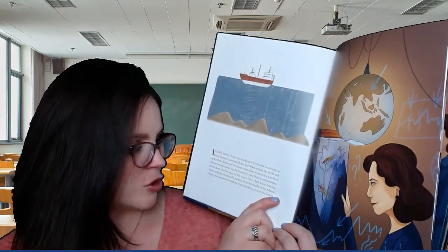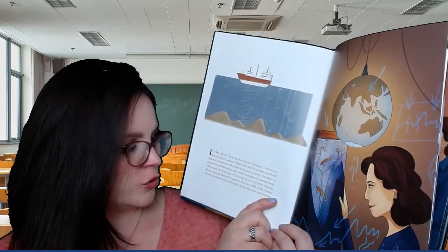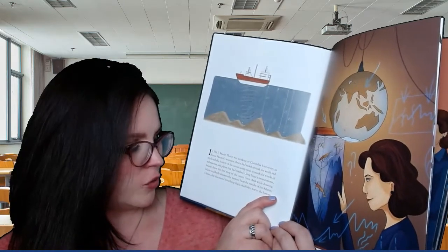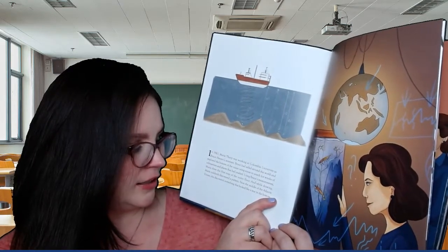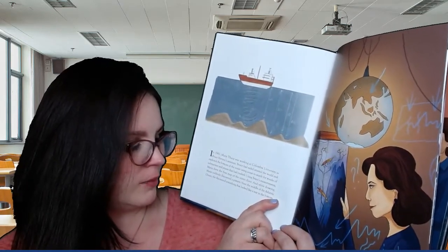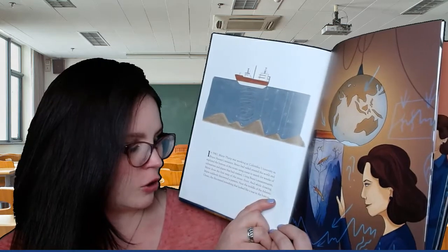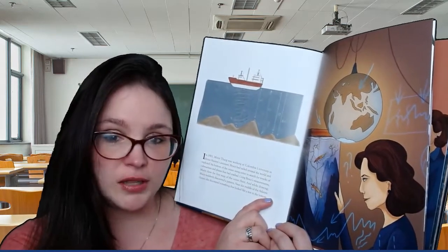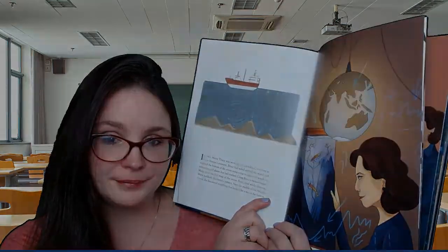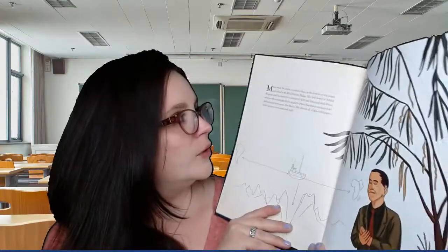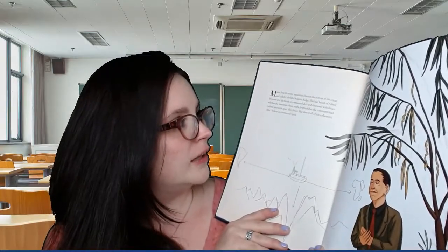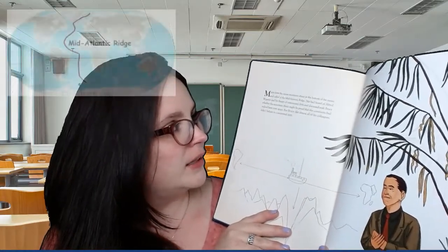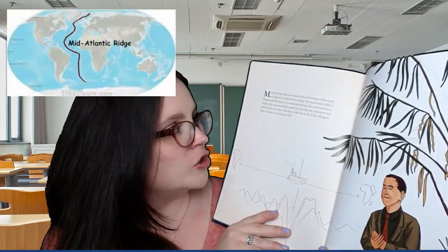Using Bruce's measurements, Marie drew the first map of the ocean floor. And while drawing, Marie suddenly discovered a pattern. Near the middle of the Atlantic Ocean, she discovered something that looked like a tear in the bottom. Marie drew the entire mountain chain at the bottom of the ocean and called it the Mid-Atlantic Ridge.